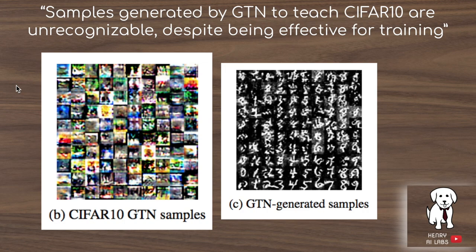A remarkable characteristic of this study is that samples generated by the generative teaching network to teach CIFAR-10 and MNIST are unrecognizable despite being effective for training. In the case of CIFAR-10, these images look like complete nonsense. In MNIST you can sort of make out some digits, although some images look completely random — or maybe not completely random since they are optimized for this task. Yet they're able to train classifiers to achieve really high accuracy on the original datasets.